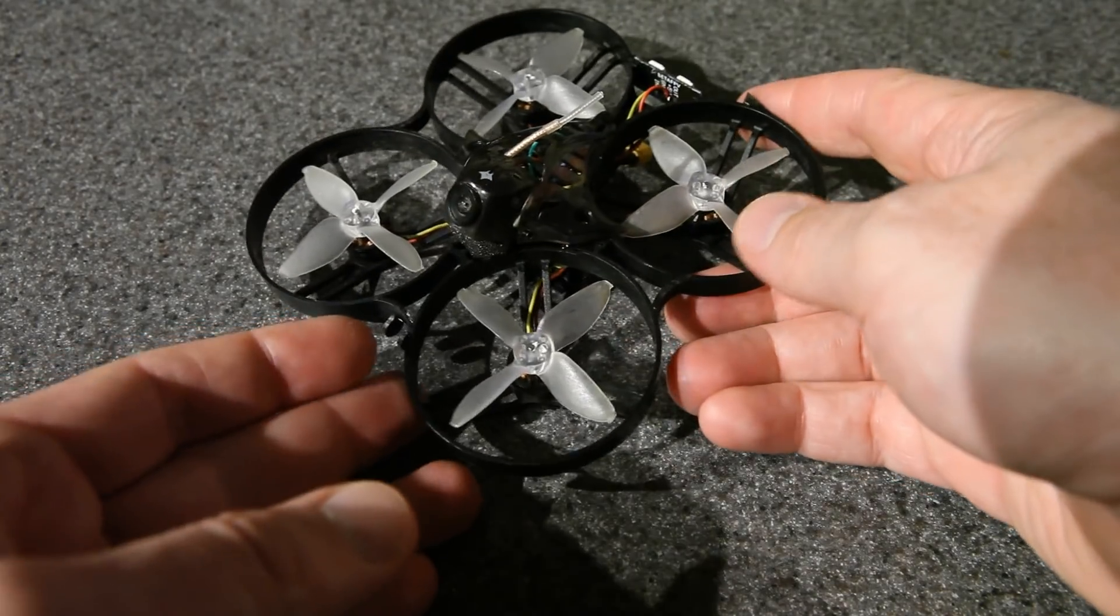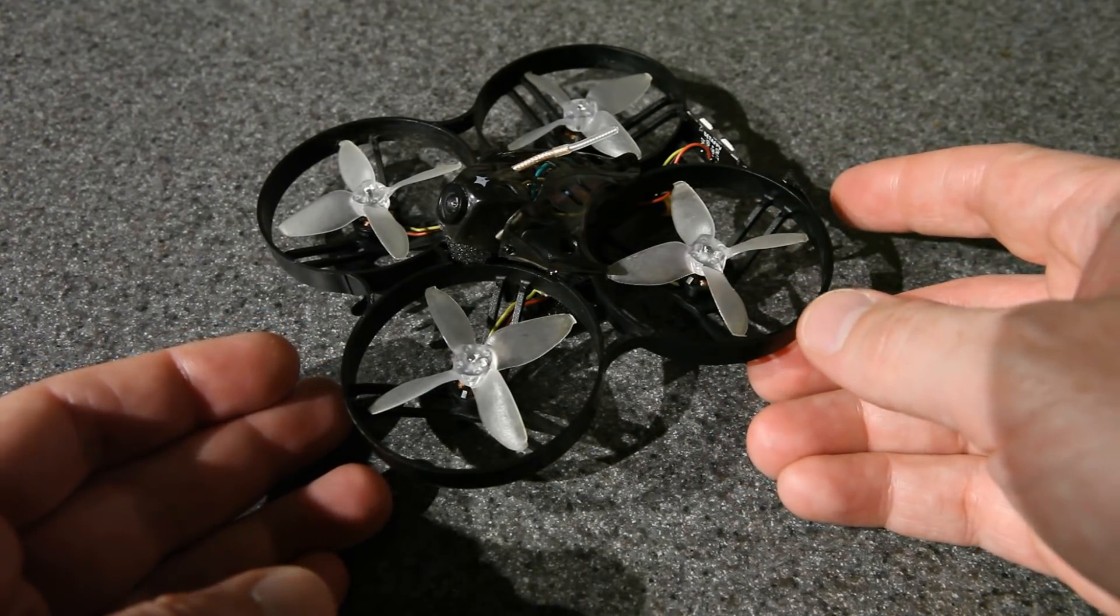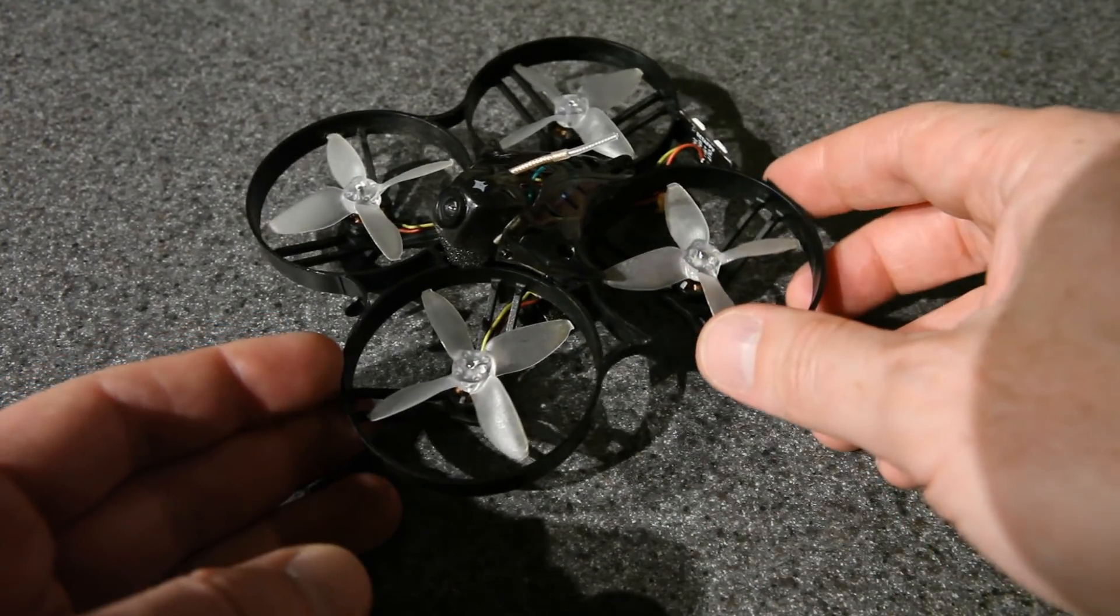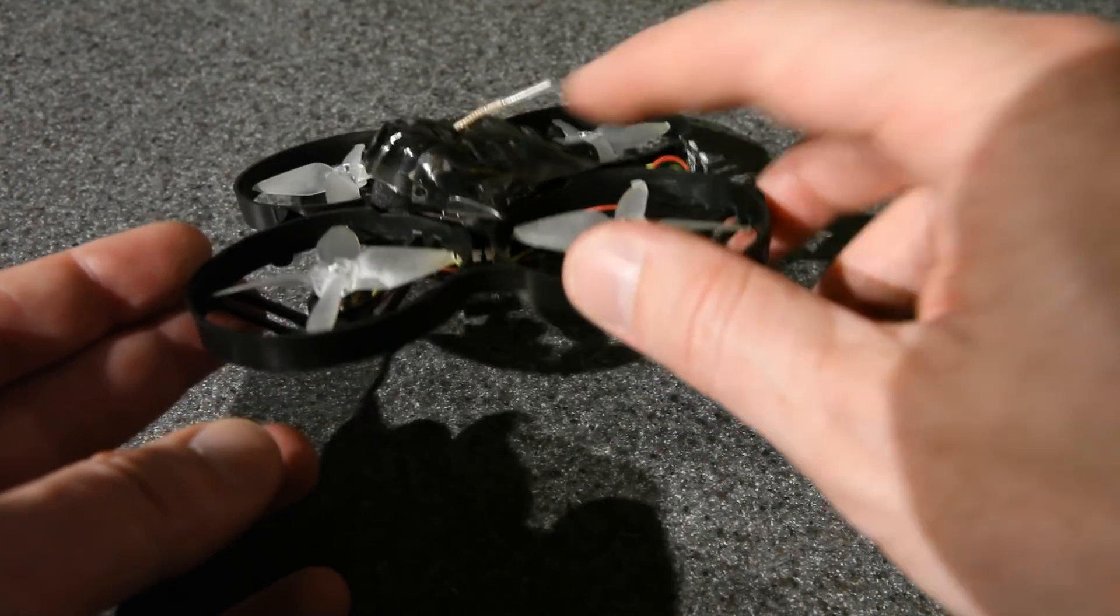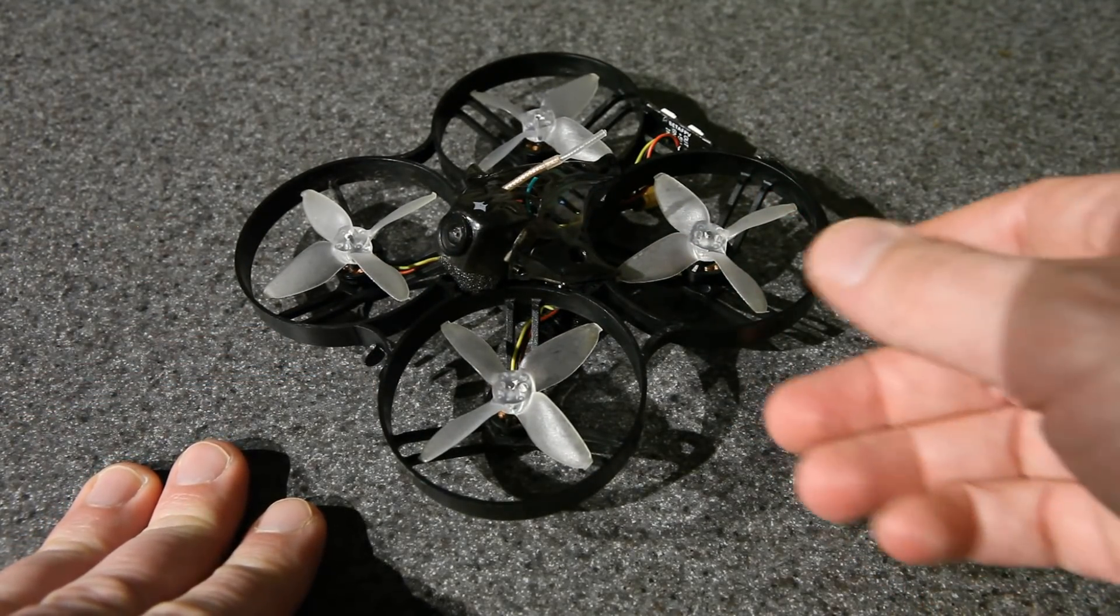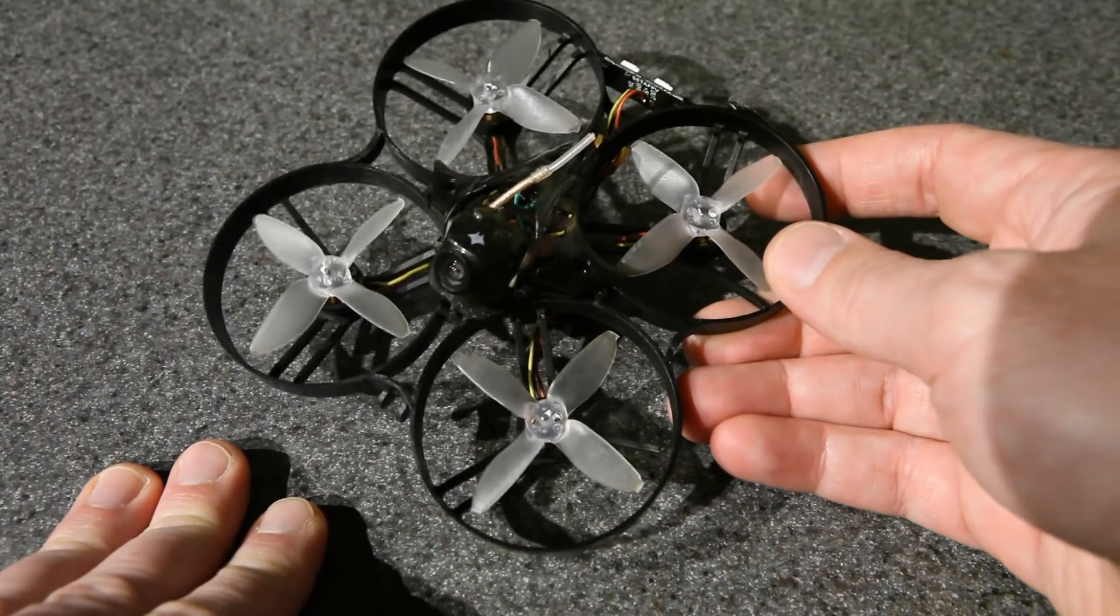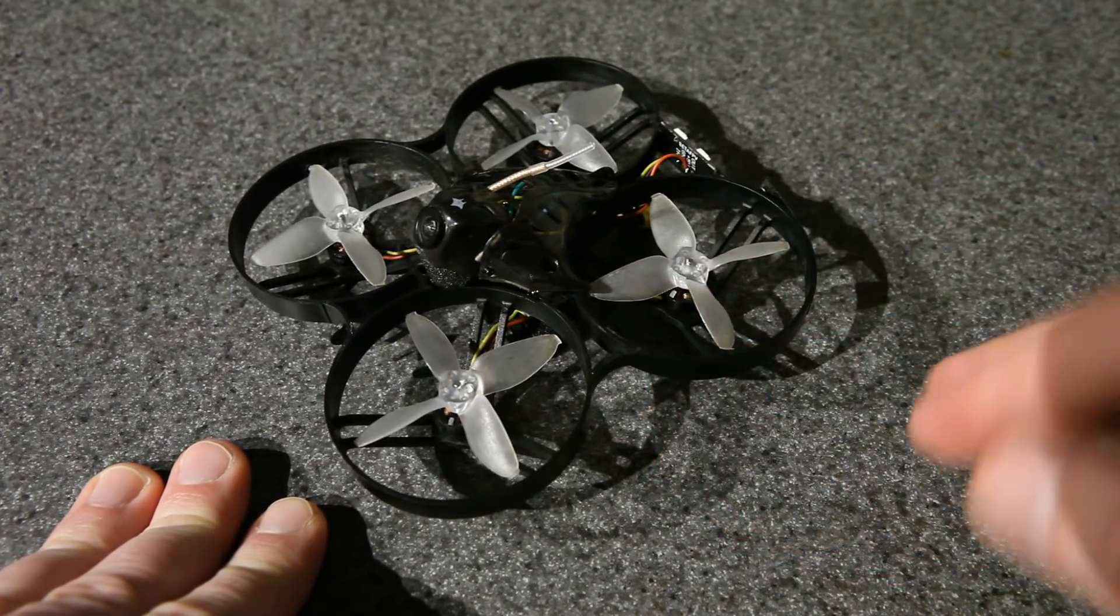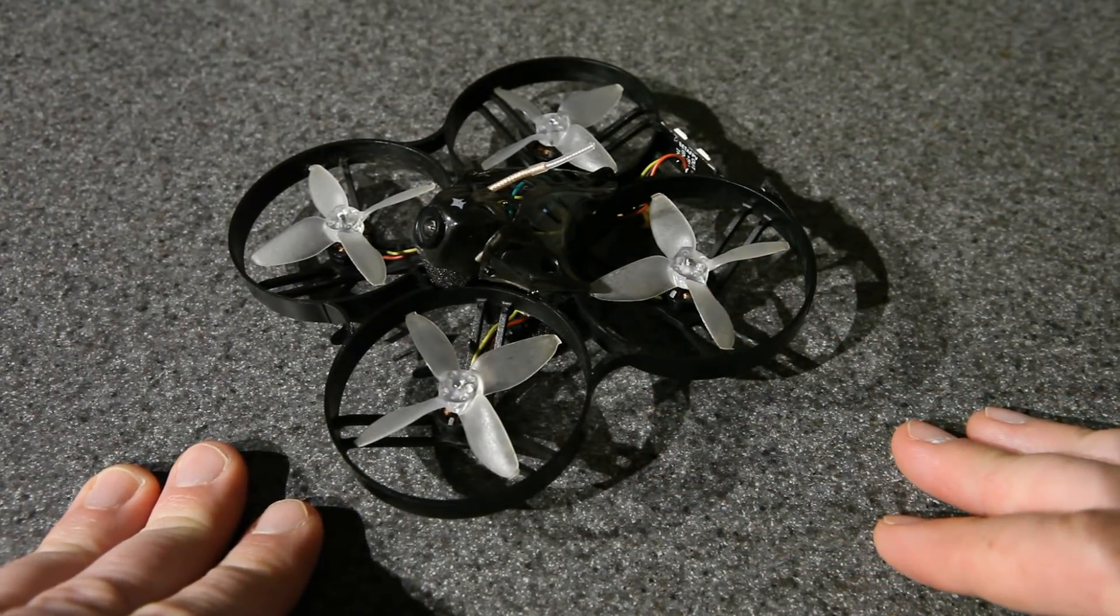Now this is one of my 2S Shutterbug 85 builds with those 11,000 kV motors. This one just happens to have a Mobula canopy on top. If you haven't seen this before, then check out the other videos on my channel. But these already fly so amazing on 2S, I really don't feel like they need 3S, but it'll be fun to try anyway.